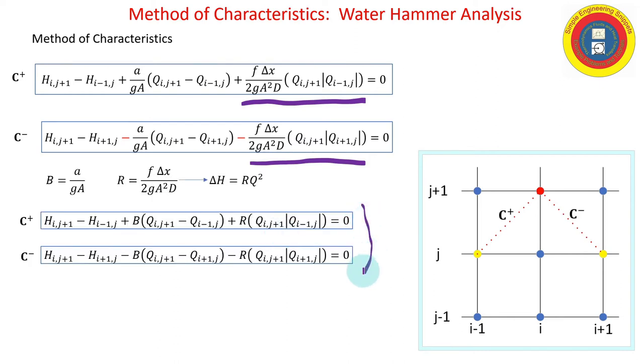And these are the equations that we typically solve on the grid. So, big picture, we know all the initial conditions and then we start marching up through time. And so, in this case, the node at i, j-plus-1 is what we're solving for.